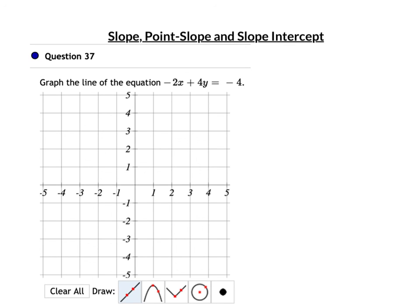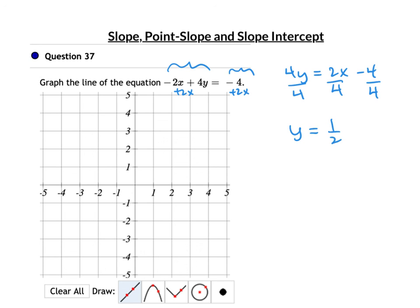This last one is in standard form — variables on one side, number on the other. To graph, solve for y: add 2x to both sides to get 4y = 2x − 4, then divide by 4. Y equals 1/2 x minus 1. The y-intercept is −1, and the slope is positive 1/2 — up 1 over 2 to the right. Draw your line.